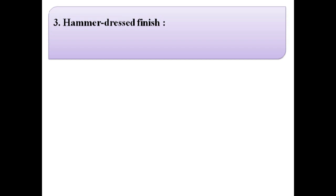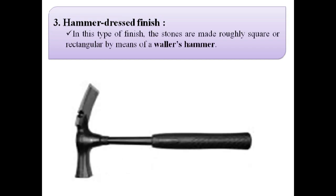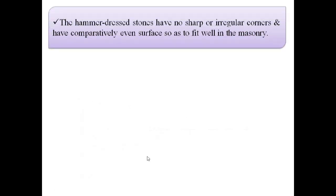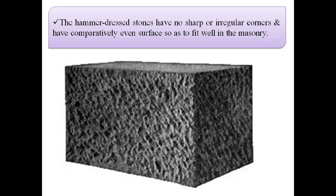The next finish is hammer dress finish. In this type of finish, the stones are made roughly square or rectangular by means of a Waller's hammer, as shown in this image. The hammer dressed stones have no sharp or irregular corners and have a comparatively even surface so as to fit well in the masonry, as shown in the image.